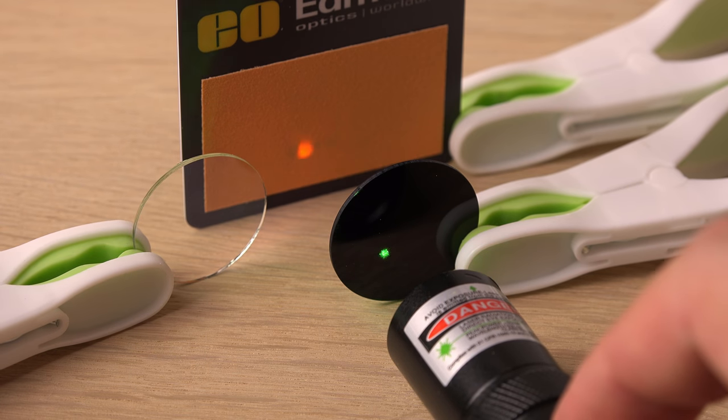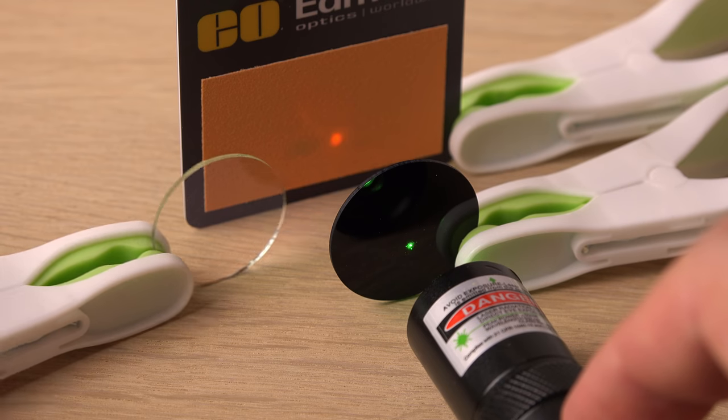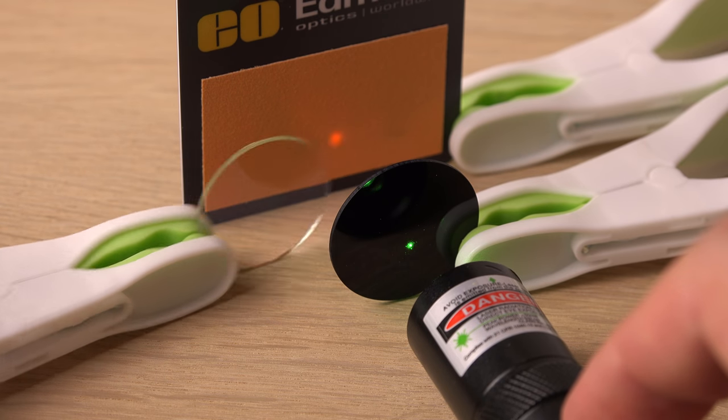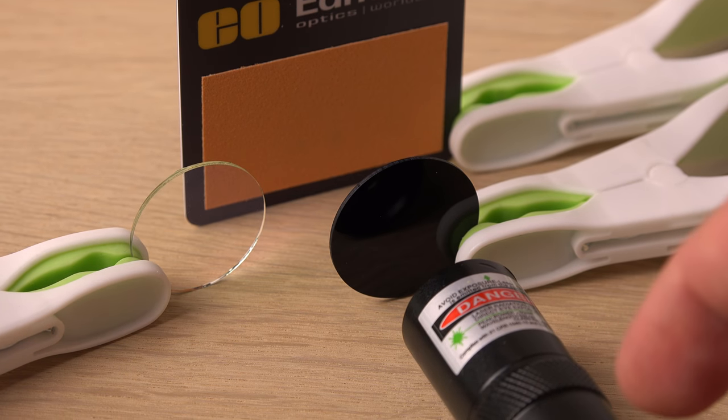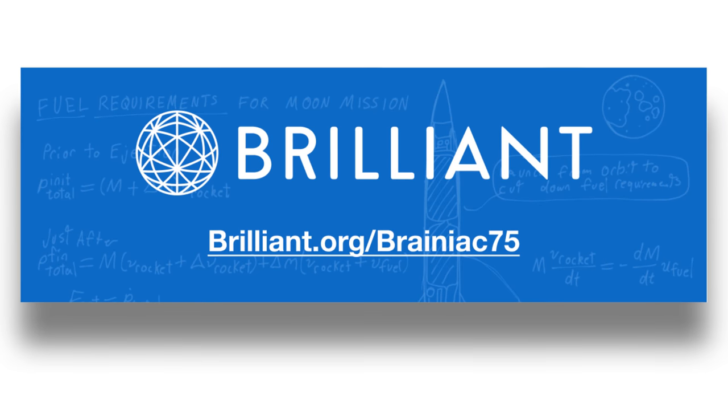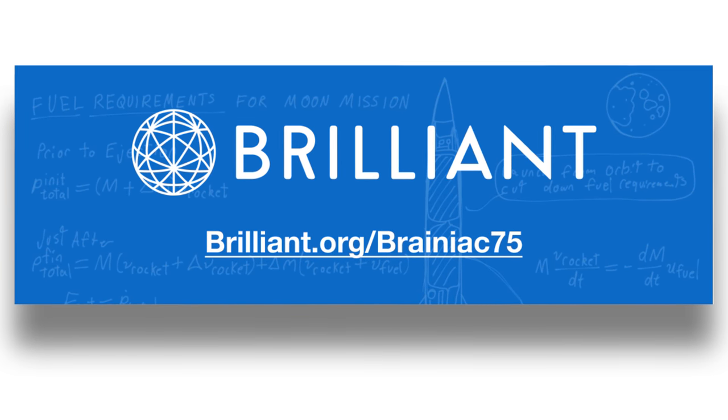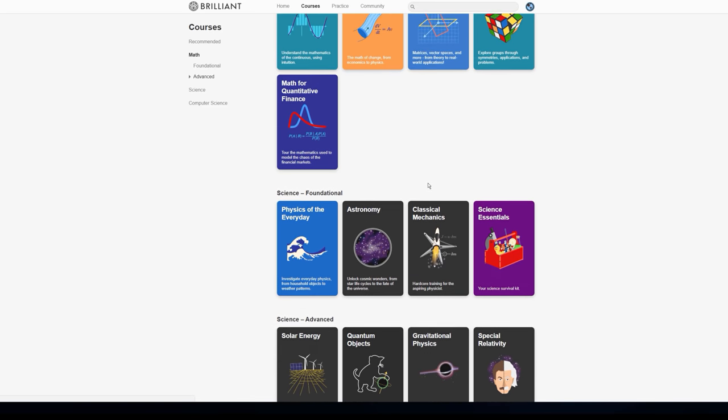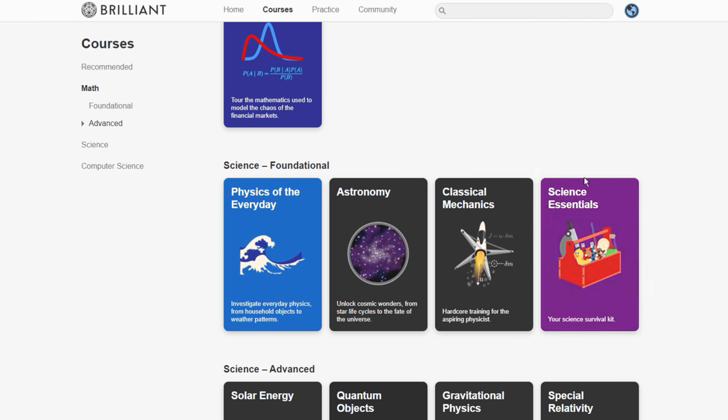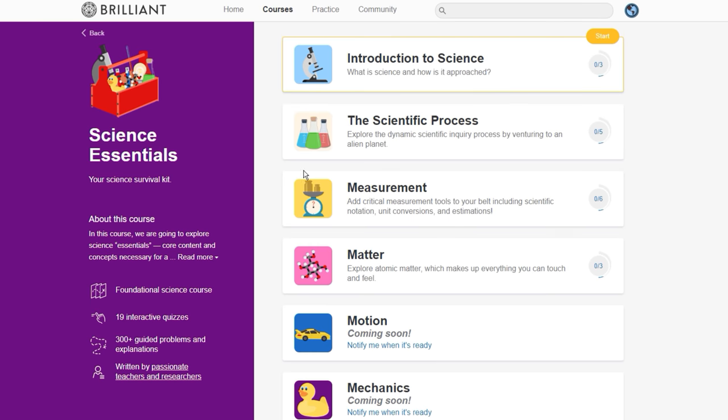I feel good learning more about infrared and how to deal with it from making this and the previous video. If you feel the same and want to learn more about science without buying expensive stuff and dealing with the risks, I have a nice tip for you. Brilliant.org is a problem solving website where you can learn to think like a scientist by performing your own thought experiments.